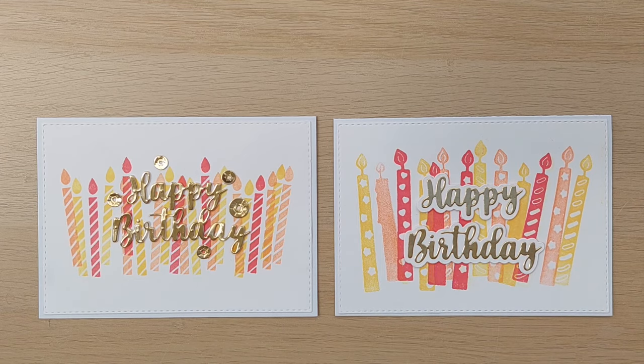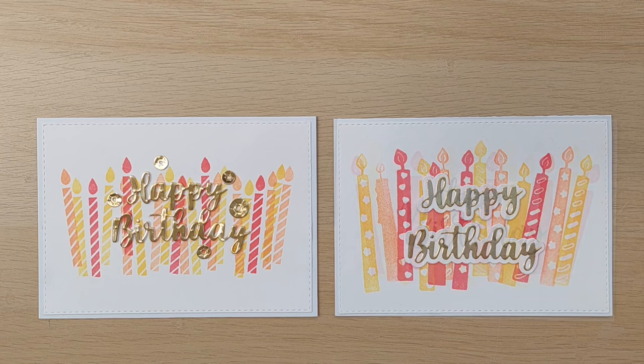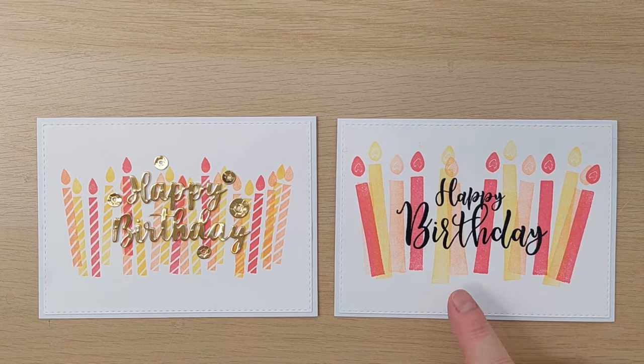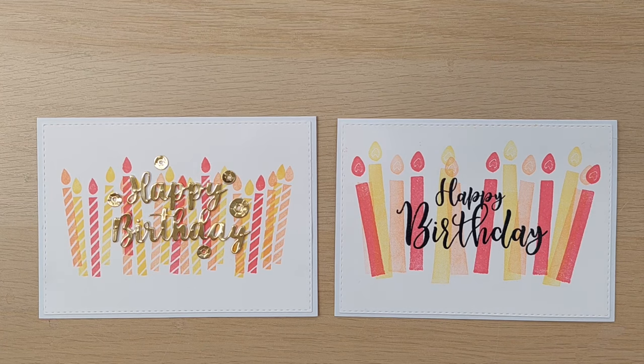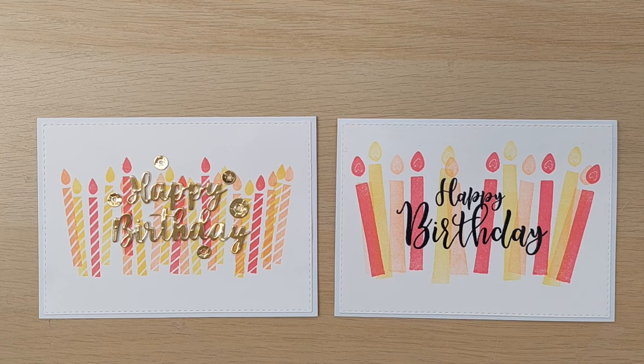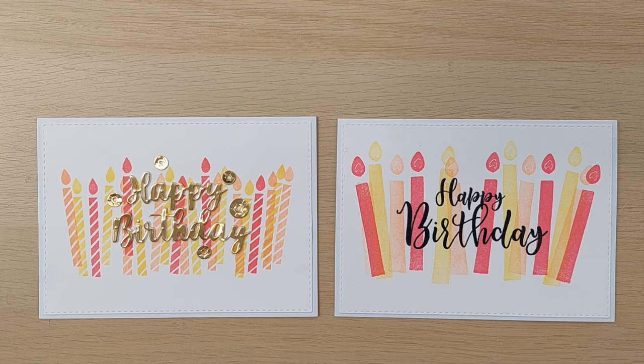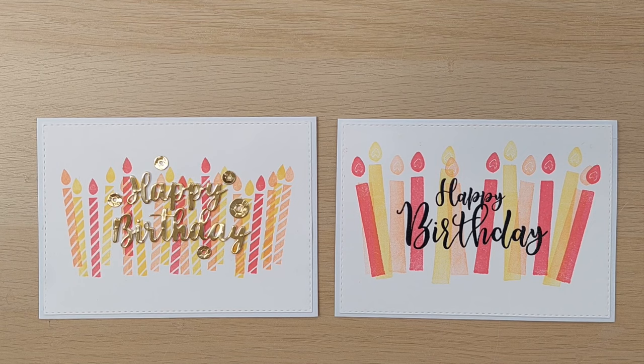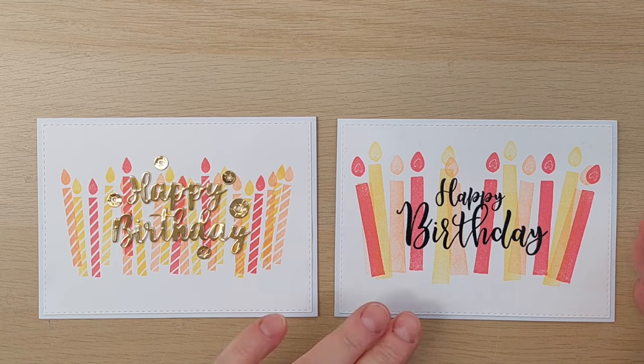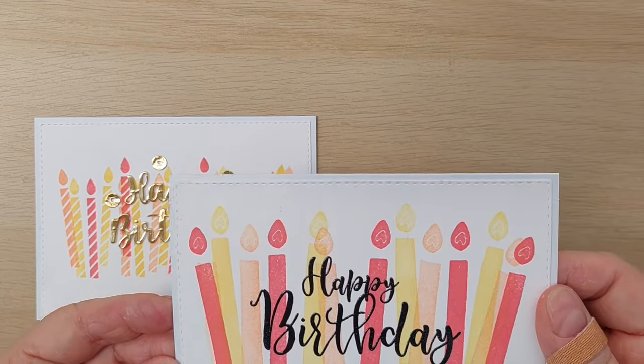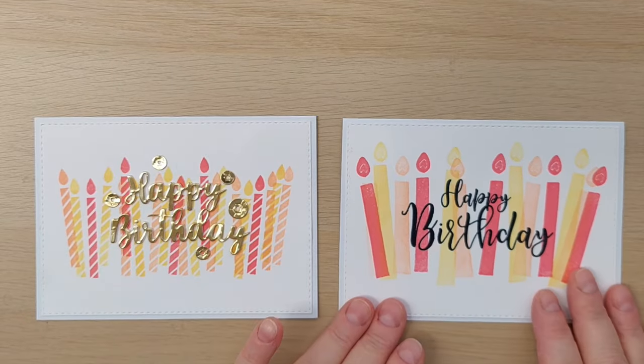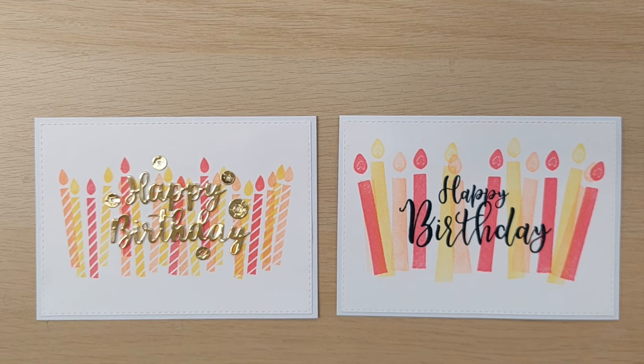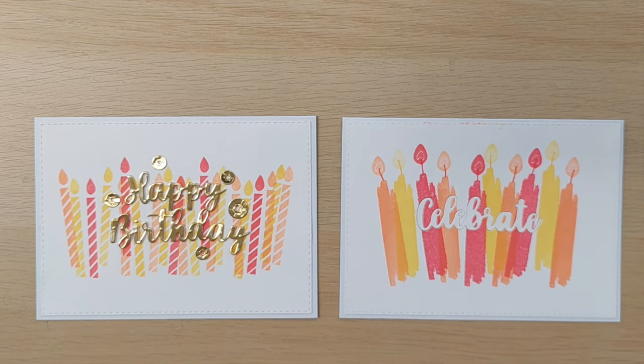For this one I stamped Happy Birthday straight onto the card panel using Memento Tuxedo Black ink. I then stamped over the top of that using clear embossing ink and dipped it in clear embossing powder and melted it with my heat tool. And now I've got a nice shiny, slightly dimensional, very bold Happy Birthday that stands out really well against the bright colorful candles.